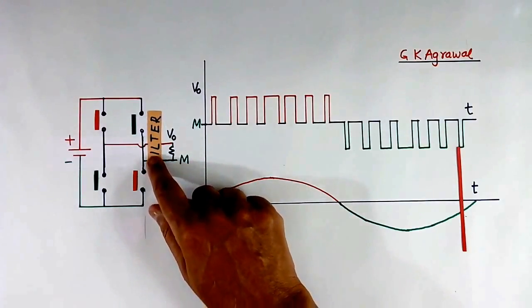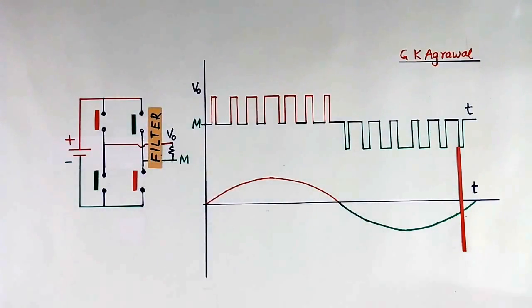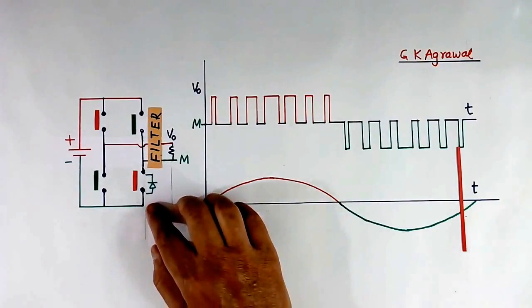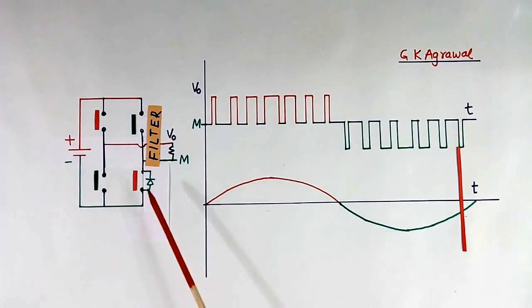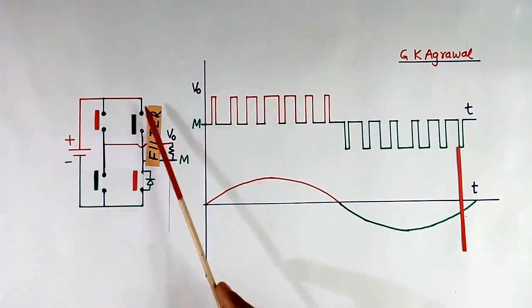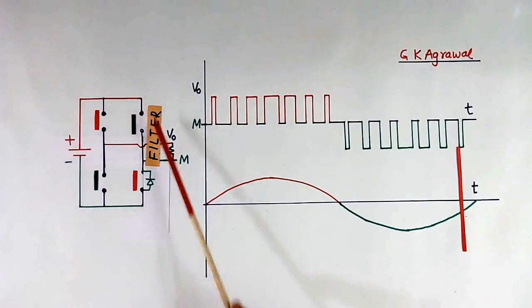Now, this is filter. Here there will be diode like this. This is called the freewheeling diode. This diode is connected across all IGBT. I have not shown, I am showing only one now.